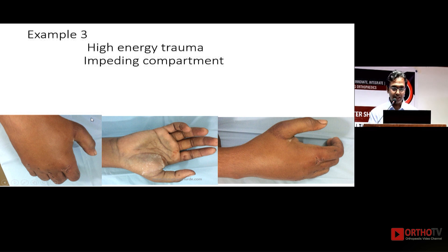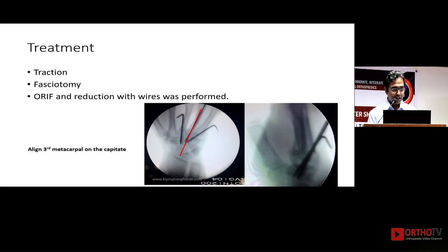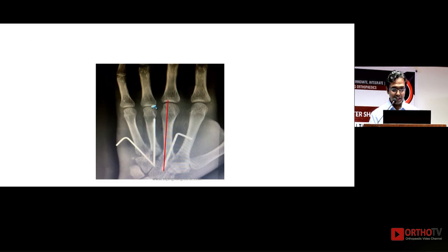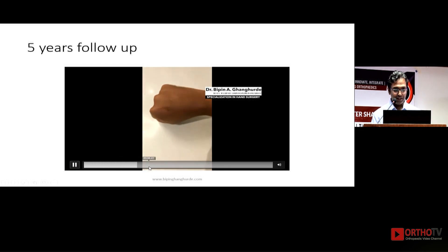These are very high-energy traumas and there can be impending compartment syndrome. In this case you can see that the third, fourth, and fifth carpometacarpal joints have dorsal subluxation — the joint is misaligned and everyone will recognize the carpometacarpal dislocation. The main aim is to align the third metacarpal on the capitate. Fasciotomy is also important, and in open approaches it is obviously performed. At five years the patient has a fairly good amount of movement with good fist and grip.